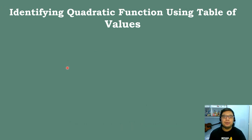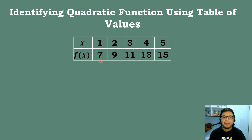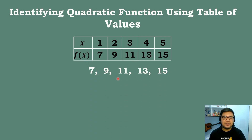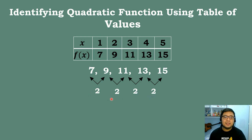Let's have our next example. We have the following set of ordered pairs. We subtract the numbers in the row of f(x): 7, 9, 11, 13, 15. The first differences are: 9−7=2, 11−9=2, 13−11=2, 15−13=2. As you can notice, the differences are the same. If the first difference is constant, then it is not a quadratic function — instead, it is a linear function.